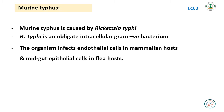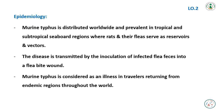Murine Typhus is caused by Rickettsia typhi, an obligate intracellular gram-negative bacteria. The organism infects endothelial cells in mammalian hosts and midgut epithelial cells in flea hosts. Murine Typhus is distributed worldwide and prevalent in tropical and subtropical seaboard regions where rats and their fleas serve as reservoirs and vectors. The disease is transmitted by inoculation of infected flea feces into a flea-bite wound.